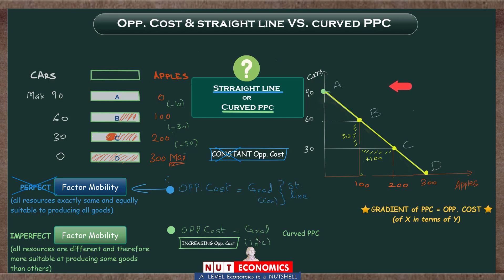To sketch this out: starting from the possibility of no apples, when you want to produce your first few apples you throw in the most suitable resources, so you don't have to give up many cars. The opportunity cost is quite small, reflected in a very flat gradient initially. But as you already have some apples and want to make more, the opportunity cost of apples increases, so the PPC becomes more steep. Joining these points gives you a curved PPC. At the early point the tangent is flat — low opportunity cost for apples — but further along, where you are already producing a lot of apples, the PPC is much steeper, reflecting a much higher opportunity cost of apples.